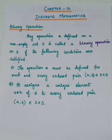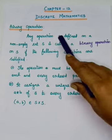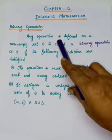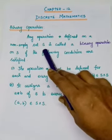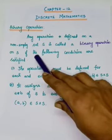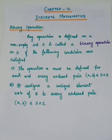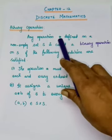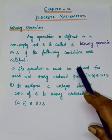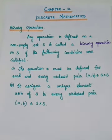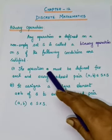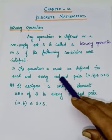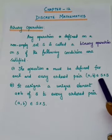Good morning students. Chapter 12, discrete mathematics. The first topic we are going to see is binary operation. Any operation which is denoted by asterisk symbol, defined on a non-empty set S, is called a binary operation on S if the following conditions are satisfied. The operation asterisk must be defined for each and every ordered pair (a, b) belonging to S cross S.